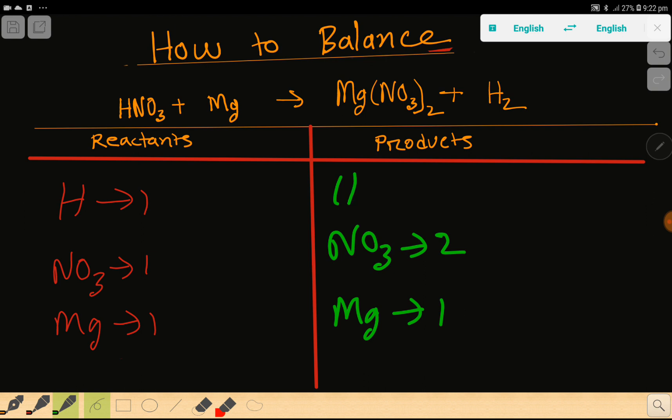Then we have hydrogen which is two. To balance this reaction means we have to balance the number of hydrogen, nitrate, and magnesium from both sides. Let me balance hydrogen first. Hydrogen here one, but here two. So to balance the hydrogen, what can we do?